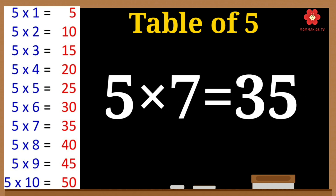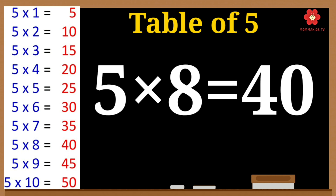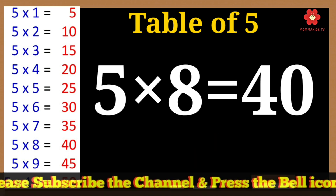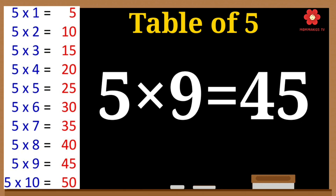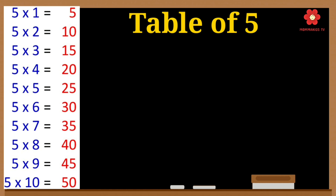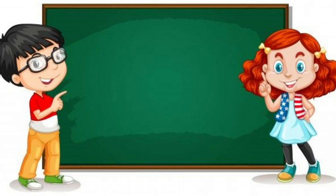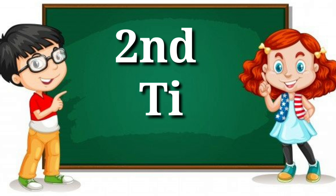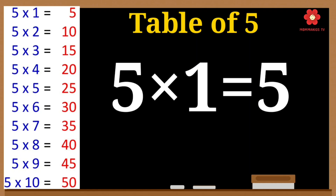5 7s are 35. 5 8s are 40. 5 9s are 45. 5 10s are 50.